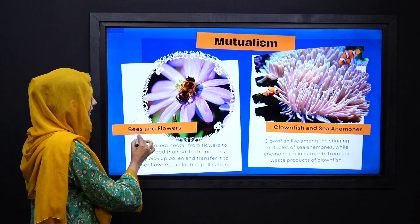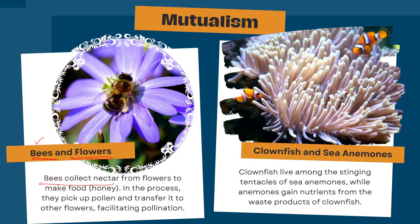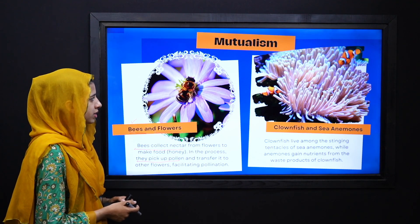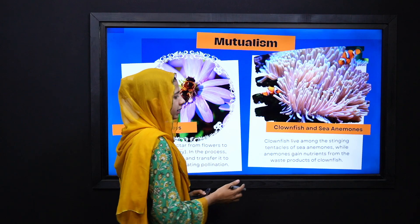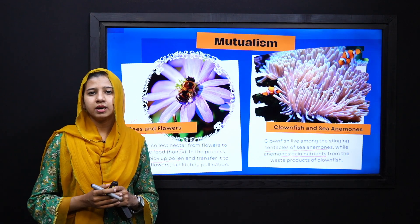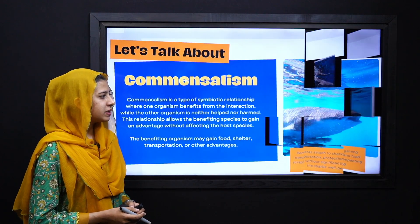Next, if we look at more examples — bees and flowers: bees collect nectar from flowers to prepare honey, and in return they help the plant through pollination by transferring pollen grains. Similarly, clownfish live inside the stinging tentacles of sea anemones as shelter, and in return provide nutrients, because the waste products of clownfish act as nutrients for the sea anemone.